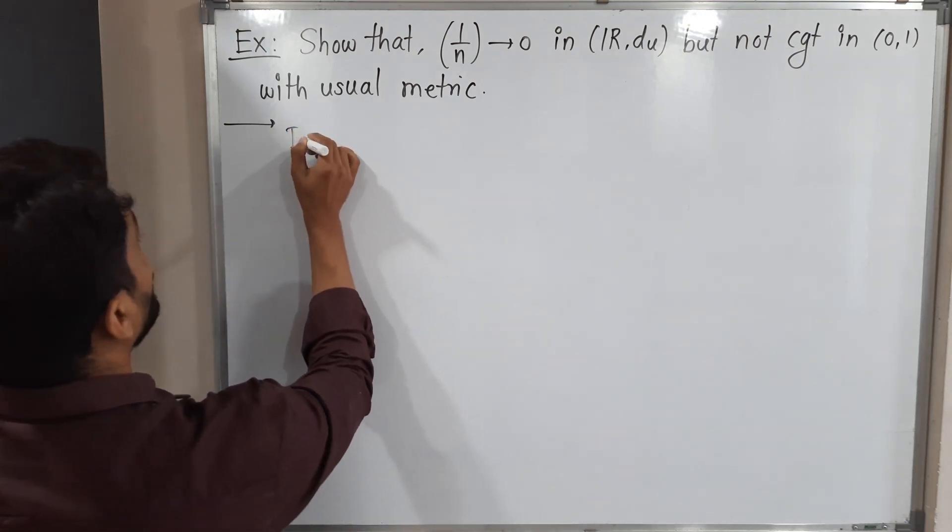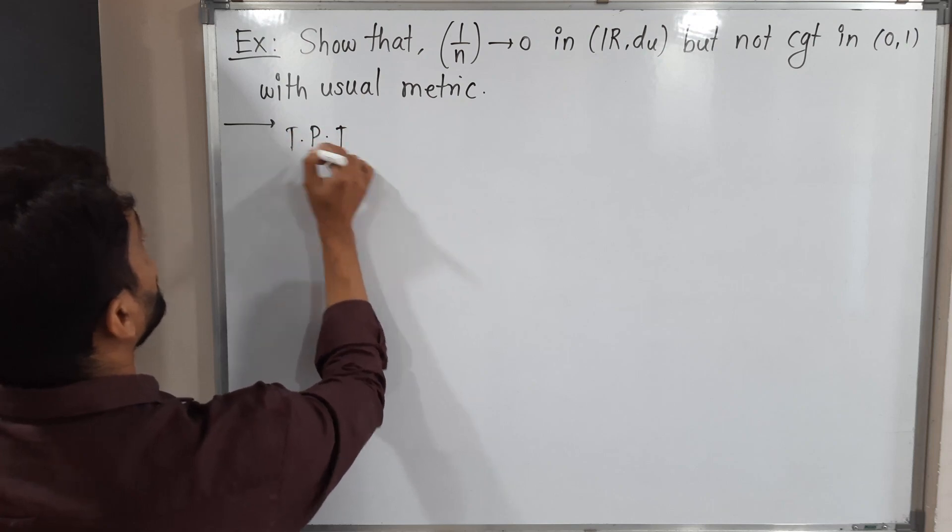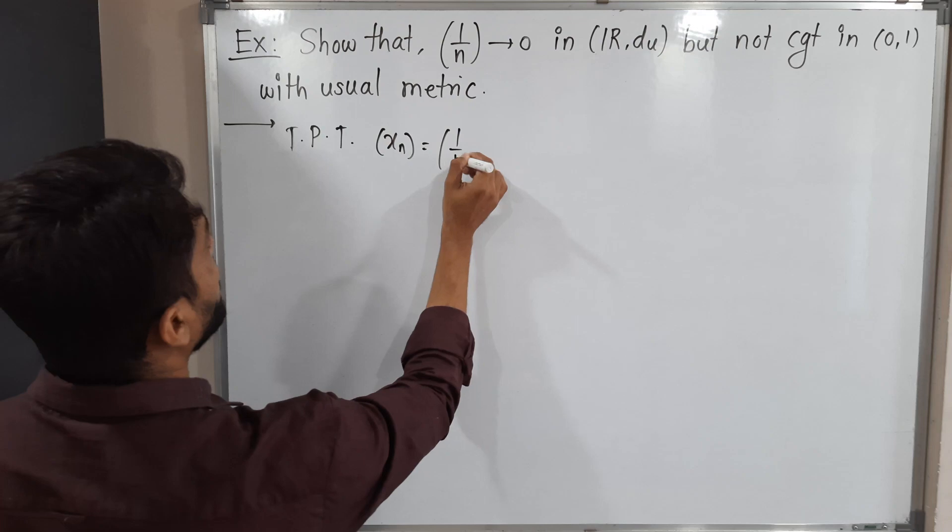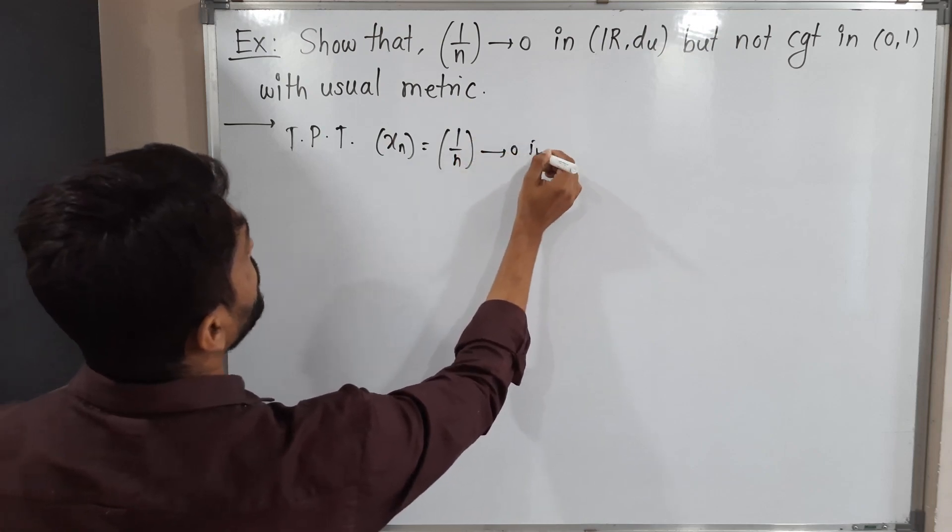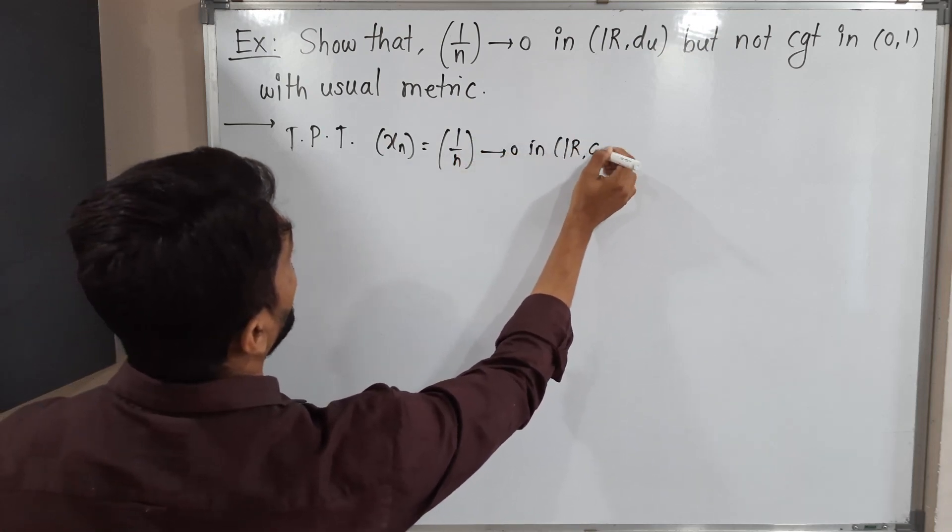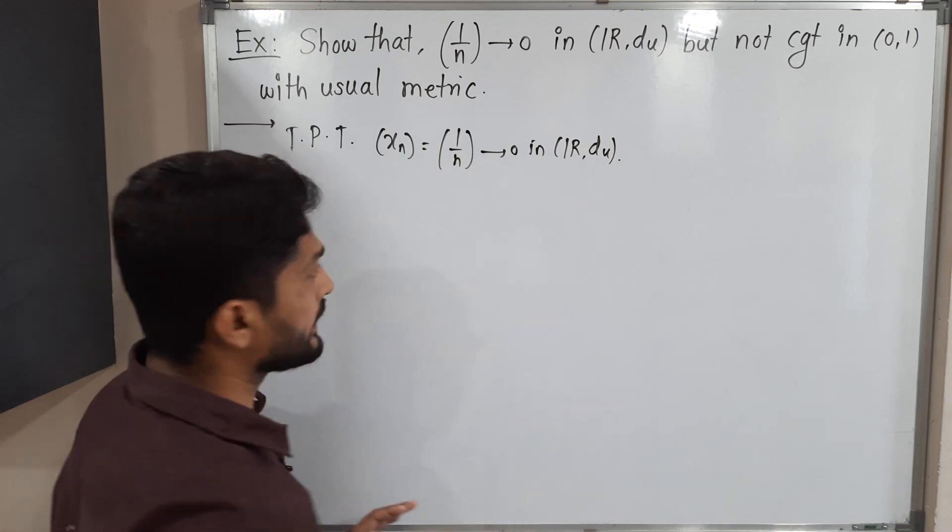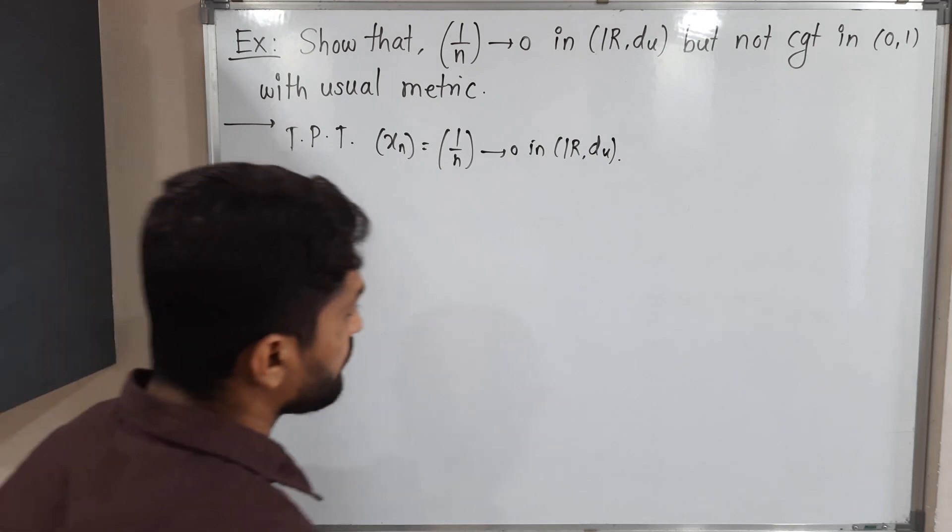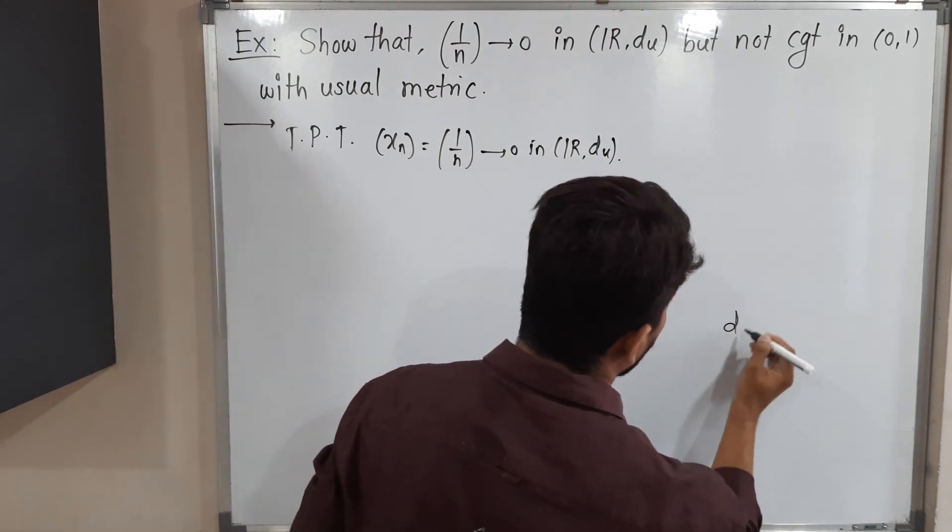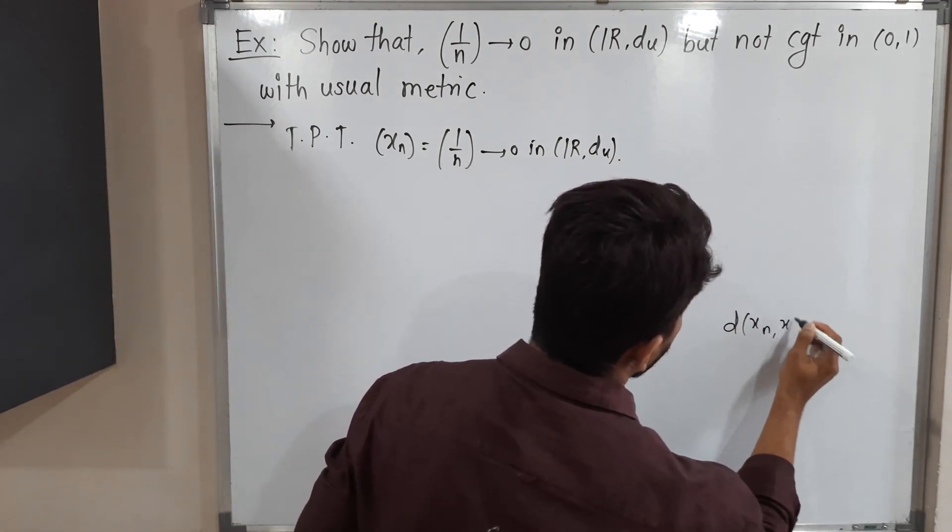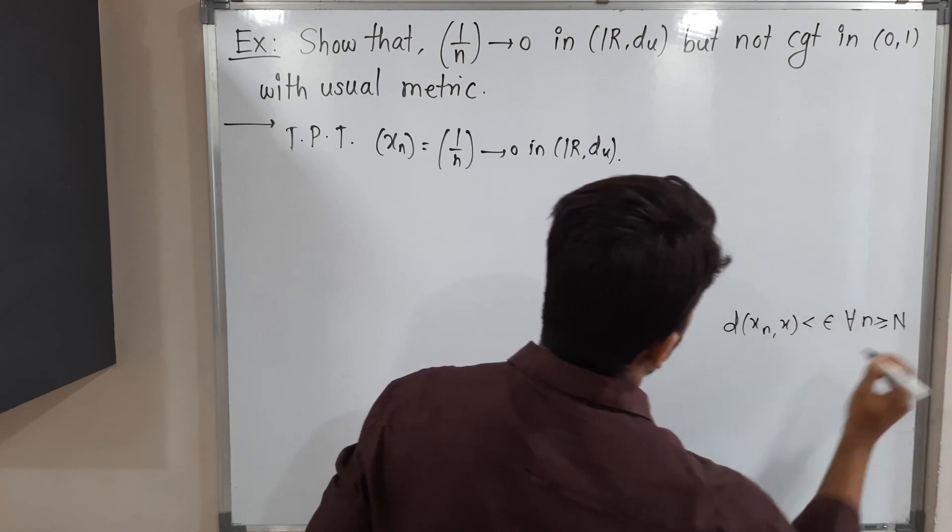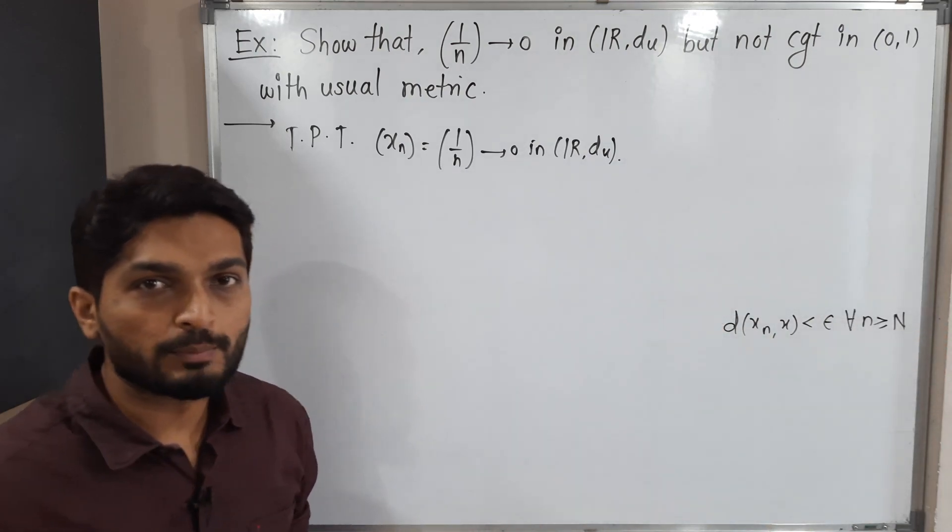To prove that the sequence 1 by n converges to 0 in R with usual distance, we are familiar with the definition of convergent sequence. Can you tell me what is the definition? D of x_n, x less than epsilon for all n greater than or equal to capital N. So this is the epsilon definition.